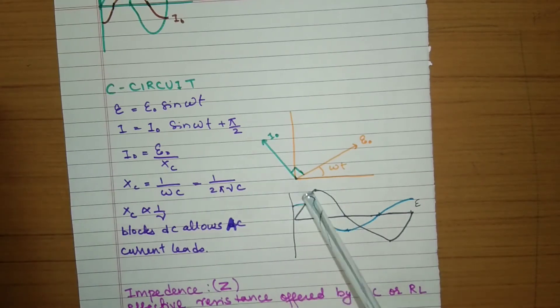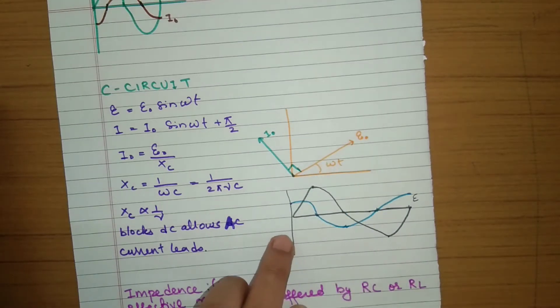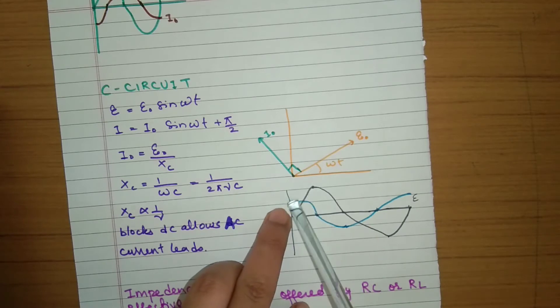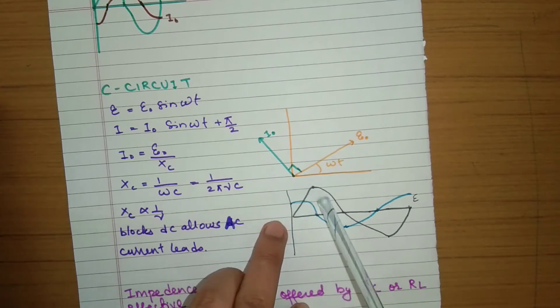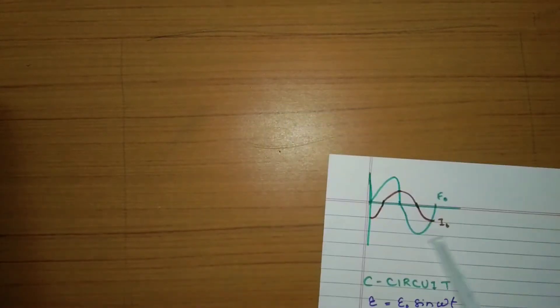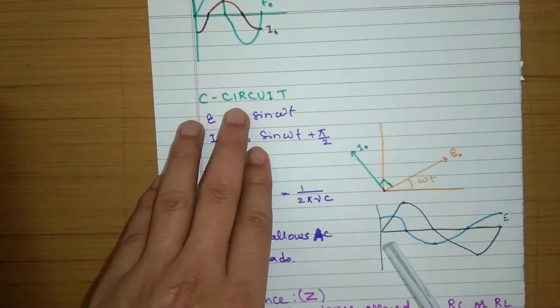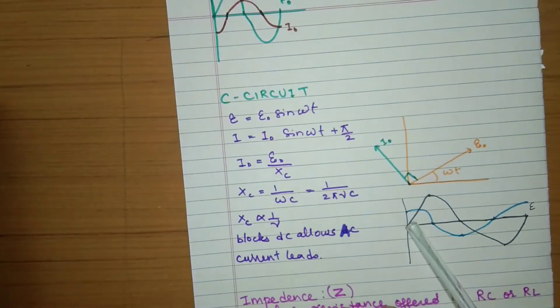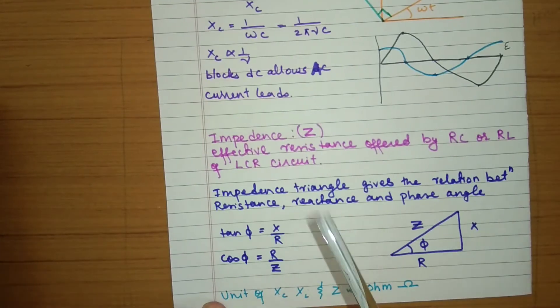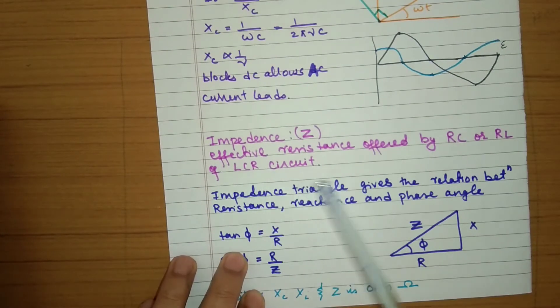In the phasor diagram for the capacitor circuit, since current leads the voltage, we draw voltage first and then start the current 90° ahead — at maximum. In the L circuit we started current from the minimum (behind), whereas in the C circuit we start current from above (ahead).